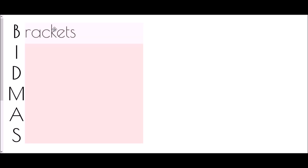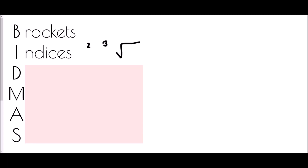The question is: what do the letters BIDMAS actually stand for? B is for brackets — if we see brackets, they must be the first part of the question we complete. Next comes I, which stands for indices. Indices are any little powers, so that might be a squared, a cubed, a square root, a cube root — anything classed as a power.